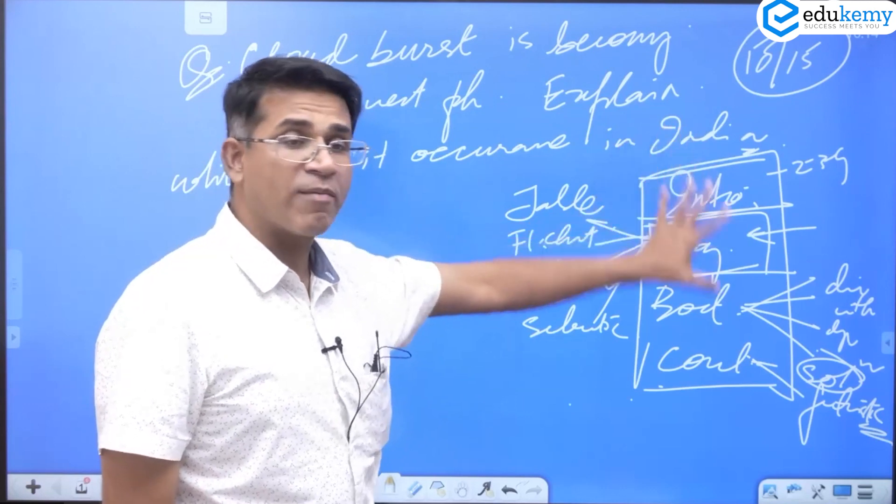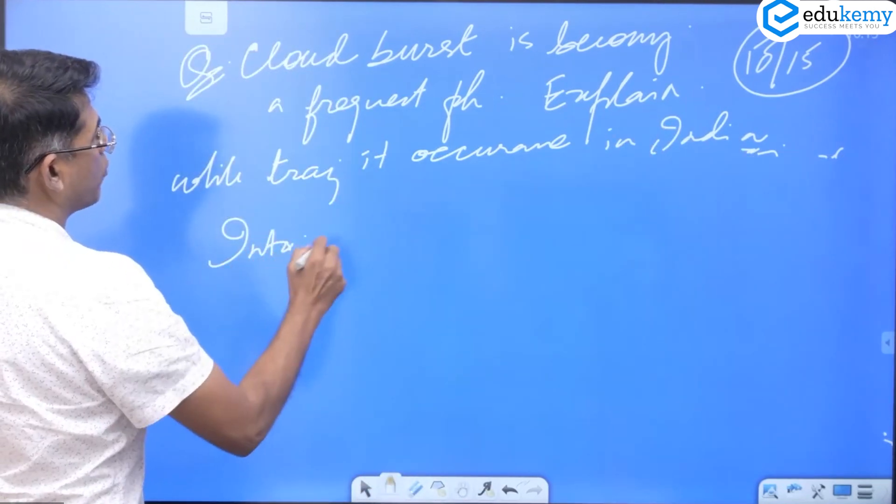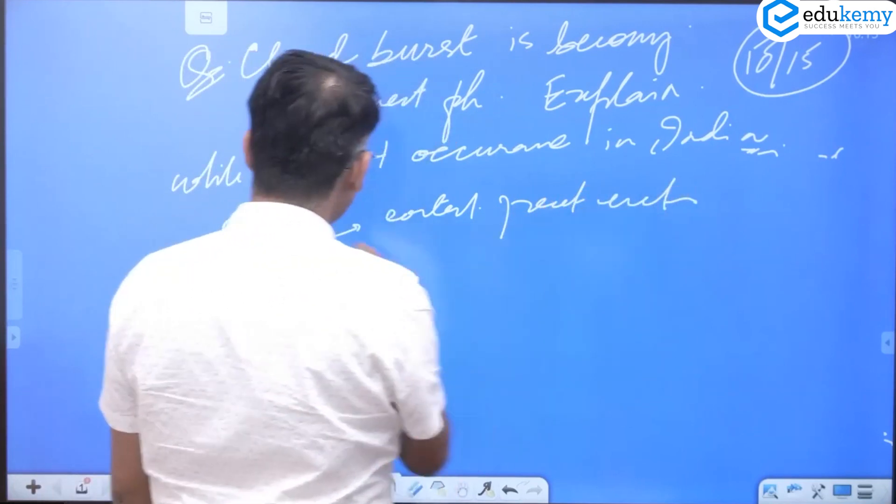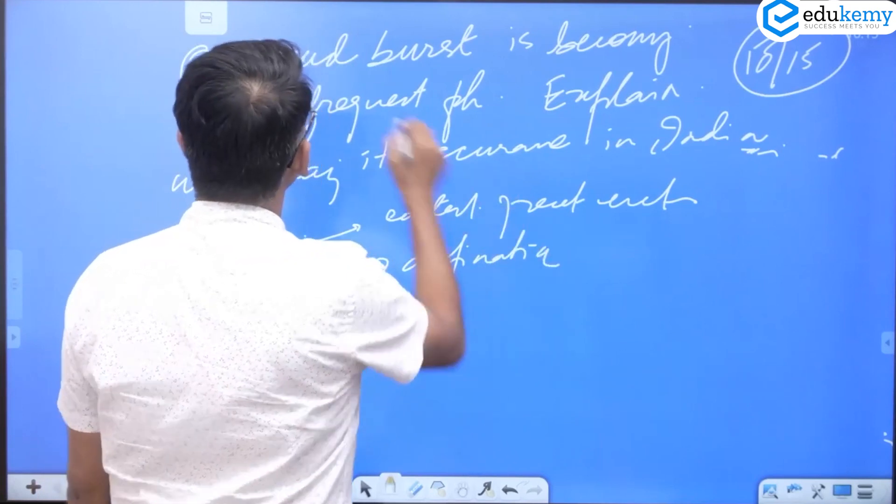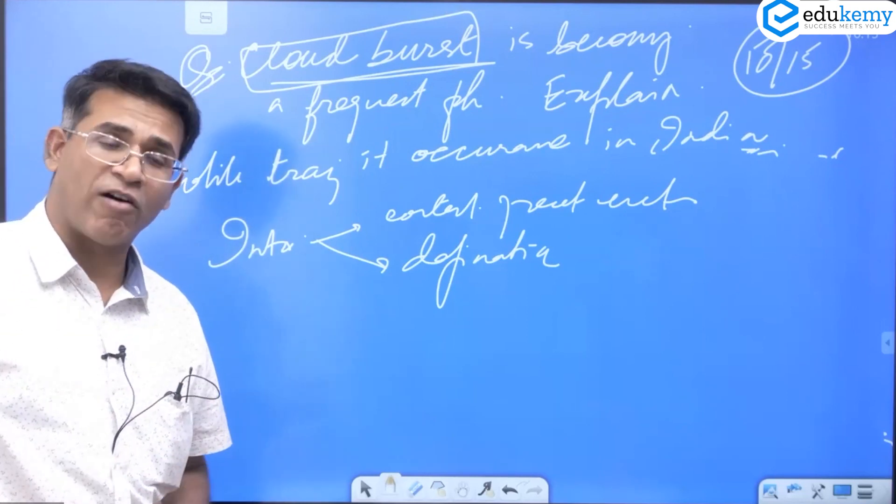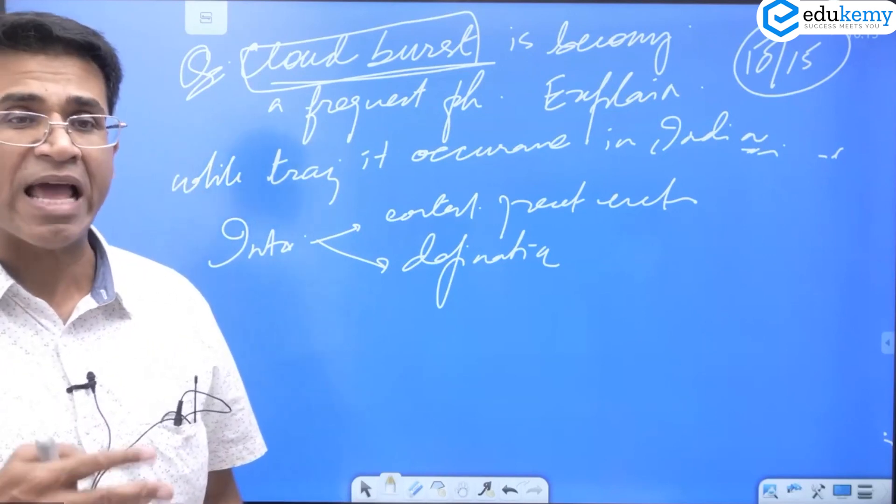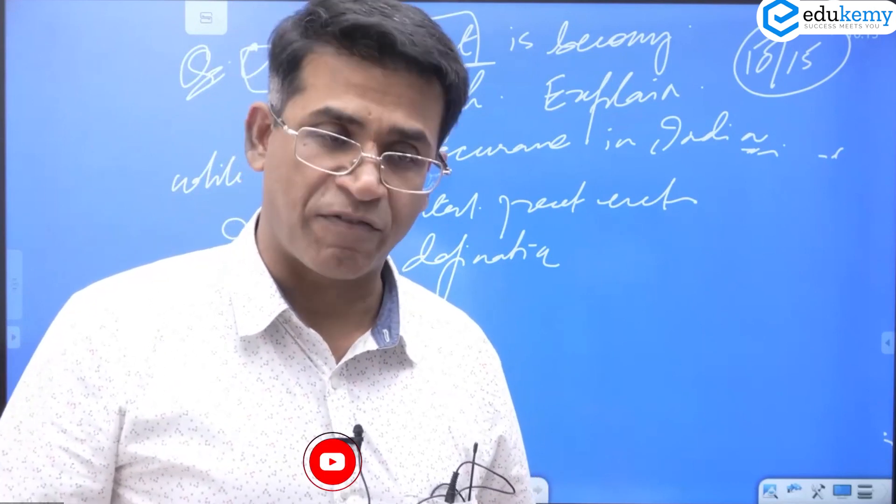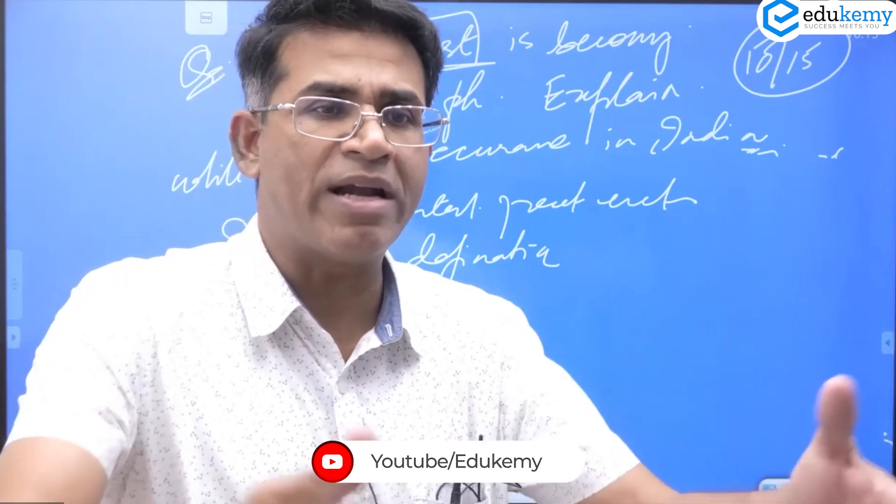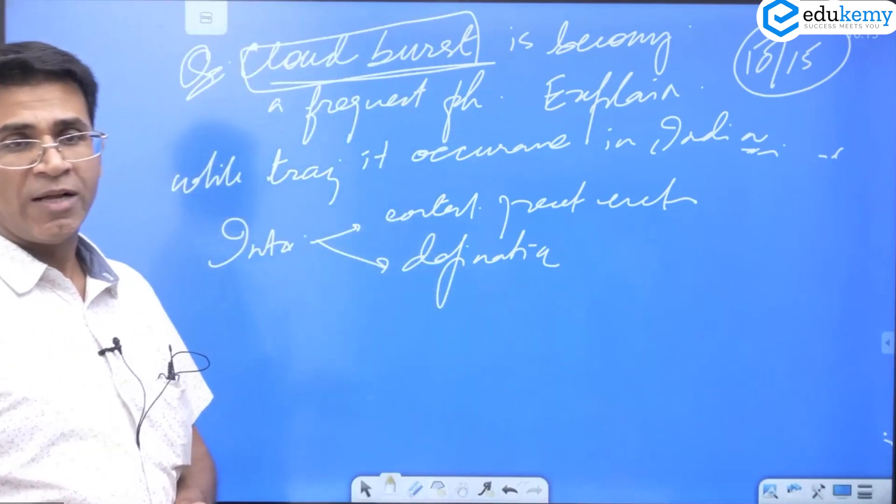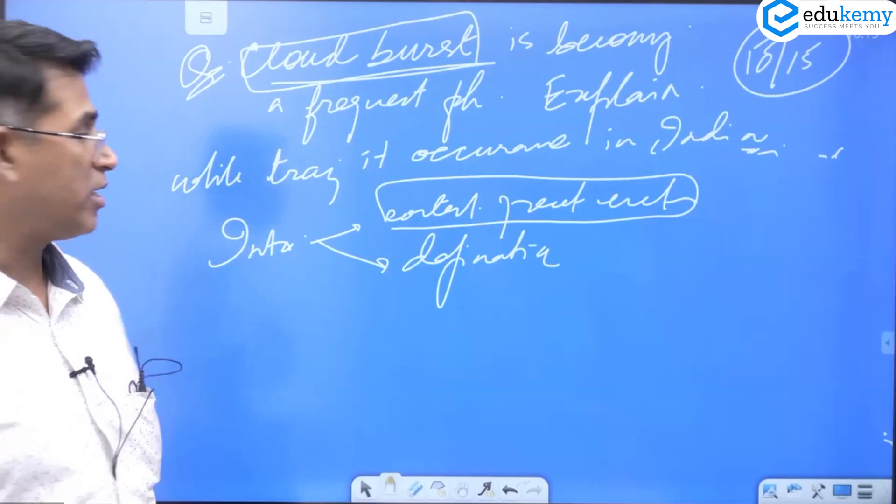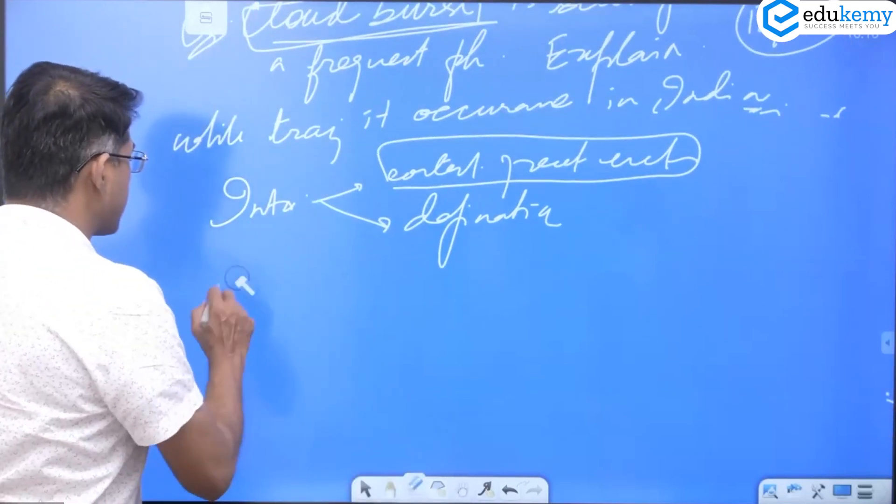In this introduction you probably can start with some context of a recent event or you can start with a definition if you know what cloudburst is. There is a typical definition: cloudburst is a very heavy rainfall where the amount of rainfall is approximately around 100mm or 10 centimeters of rainfall in about one hour in an area, and not a very large one, about 20-30 square kilometers. That's called as the cloudburst. If you do not know that, you can still write in the context of some recent events.